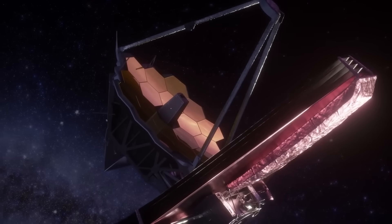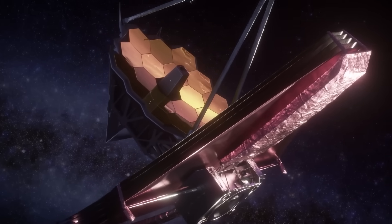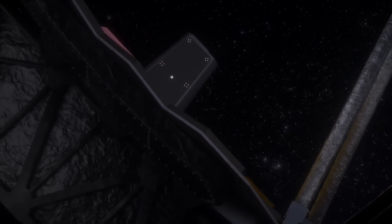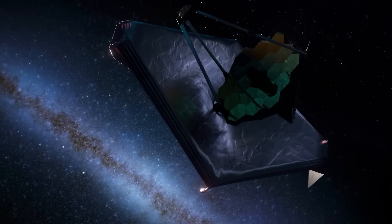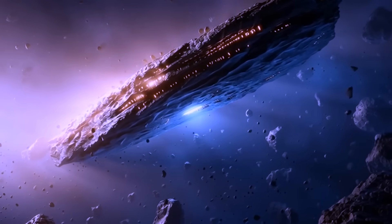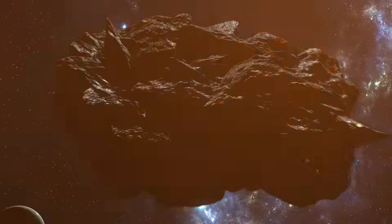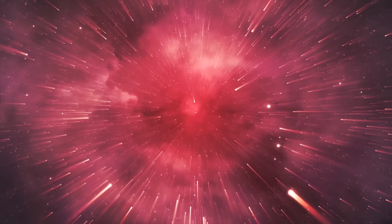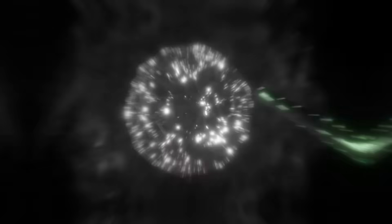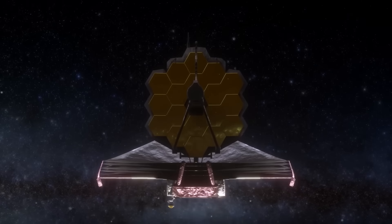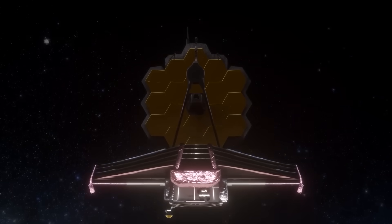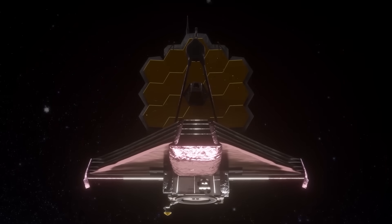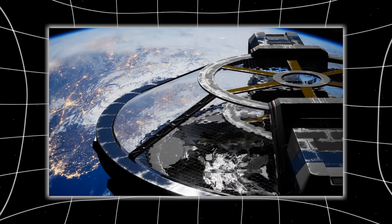To investigate further, the James Webb Space Telescope was reoriented toward 3I Atlas, its instruments calibrated for hyperspectral imaging. What it captured sent shockwaves through every scientific institution. Beneath the object's reflective surface, Webb detected a geometric structure, a lattice-like framework running beneath its crust, composed of repeating hexagonal plates aligned with its rotation axis. It was not random, not fractured, not natural. Each plate measured precisely the same dimension, reflecting light in mathematically perfect intervals. Webb's analysis suggested the structure was composed of a highly conductive nickel-titanium alloy, with atomic purity higher than anything found in nature.